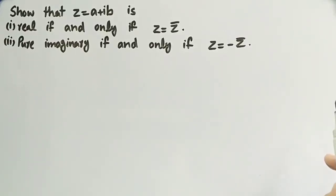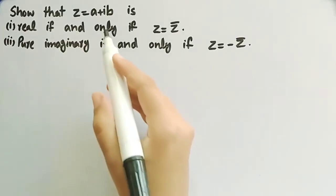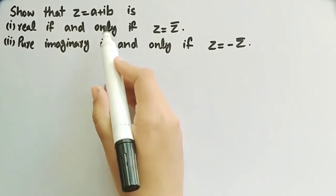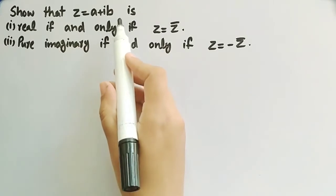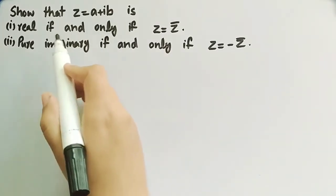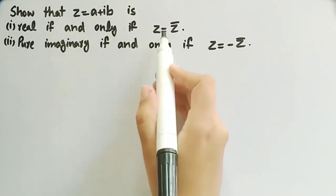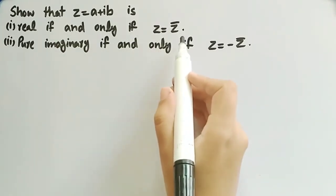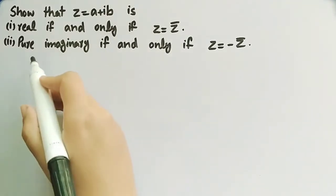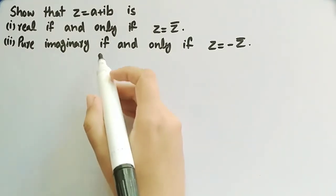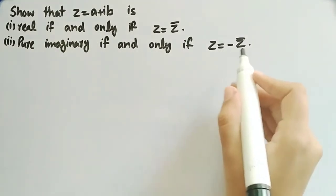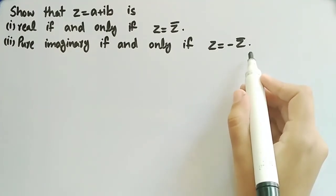In this video, we will show that a complex number Z equal to A plus iB is real if and only if Z is equal to Z conjugate, and Z is pure imaginary if and only if Z is equal to minus Z conjugate.